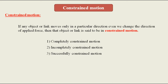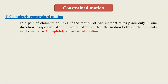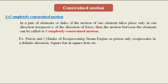These types can be observed when we make a particular mechanism by joining a number of links. Completely constrained motion: in a pair of elements or links, if the motion of one element takes place only in one particular direction irrespective of the direction of force, then the motion is called completely constrained motion. An example is the piston and cylinder of a reciprocating steam engine.